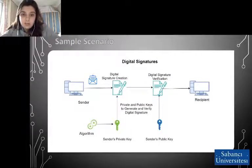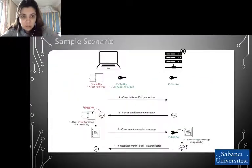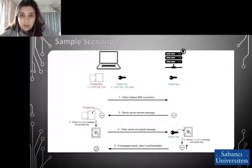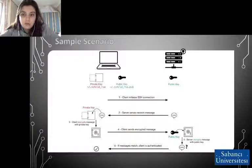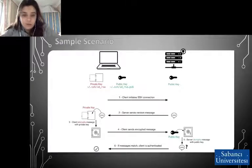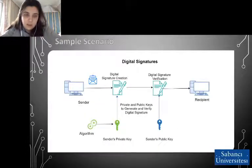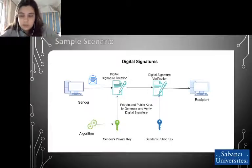Here is another example scenario about an internet connection. First, public and private keys are generated. Then the client initiates the SSH connection. The server recognizes the request and sends a random message. The client encrypts the message with its private key and sends the encrypted message to the server. The server decrypts the message from the client with the client's public key. If both messages match, the client is authenticated. This scenario shows how to create and verify a digital signature.